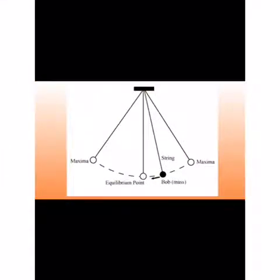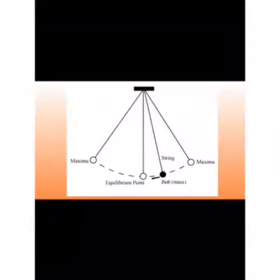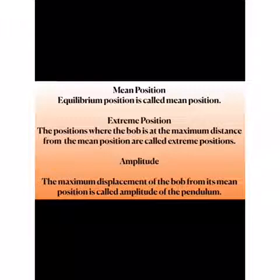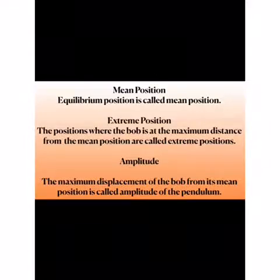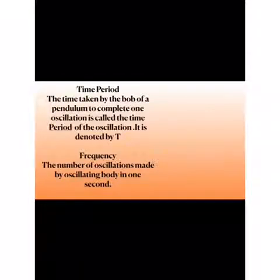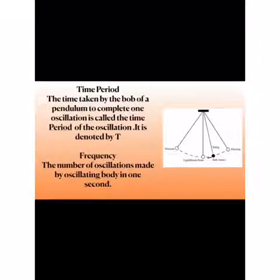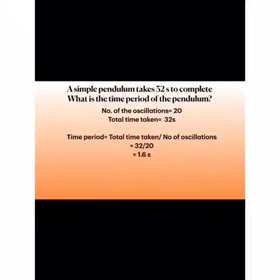The equilibrium point is known as the mean position or original position. The maximum displacement of the bob on either side of the mean position is called the extreme position. The amplitude is the maximum displacement of the bob from its mean position. The time period is the time taken by the bob of the pendulum to complete one oscillation. Frequency is the number of oscillations made by the pendulum in one second.